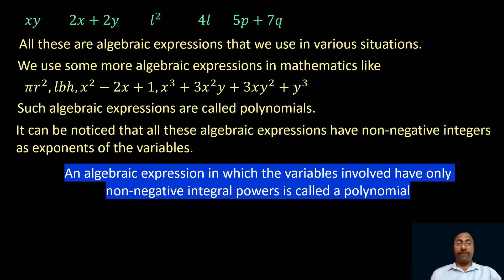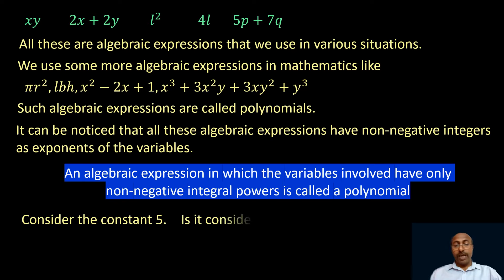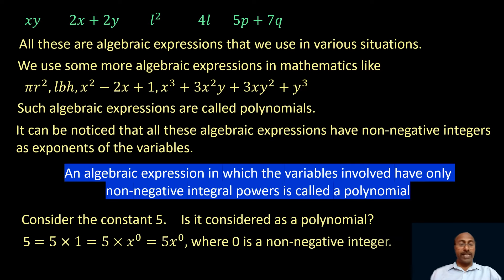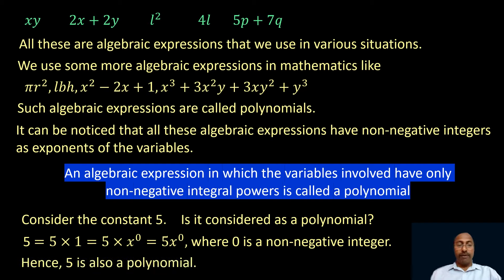The powers of the variables in a polynomial should be non-negative — it may be 0 or positive, but it should not be negative. Consider the constant 5. Is it a polynomial? Yes — 5 can be written as 5 into 1, and 1 can be written as x power 0. So 5 equals 5·x⁰, where 0 is a non-negative integer, making 5 also a polynomial.